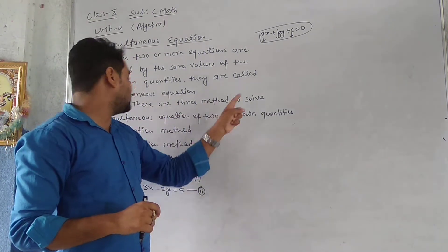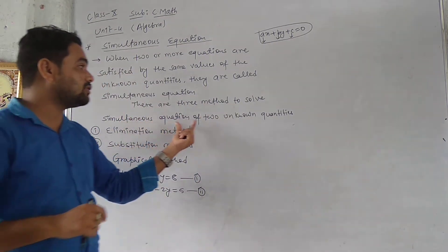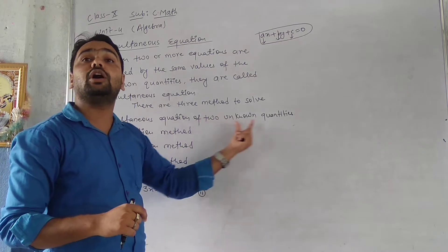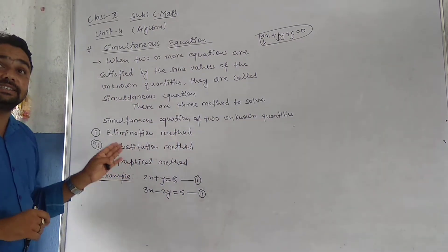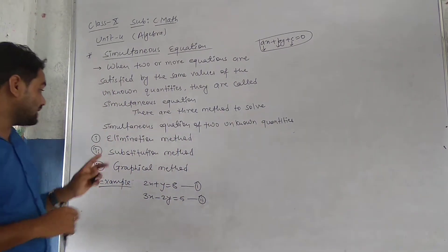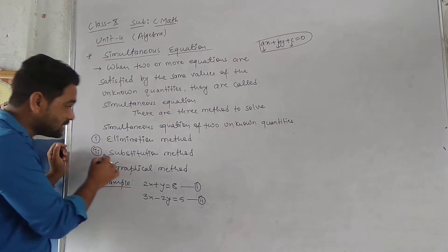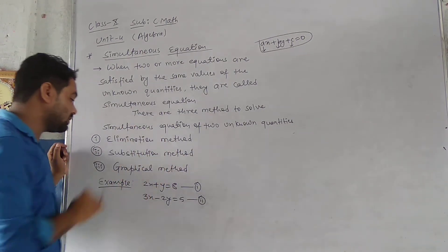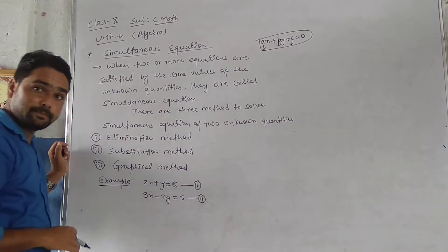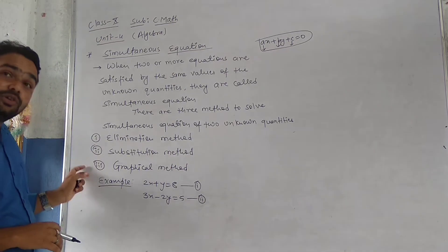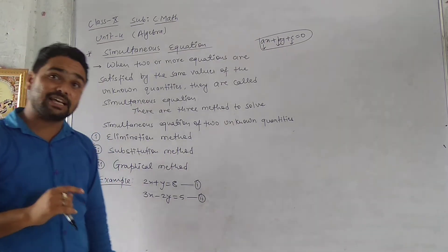There are three methods to solve the simultaneous linear equation of two unknown quantities, which we have already discussed in class 9. They are the elimination method, substitution method, and graphical method.